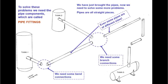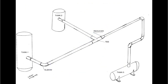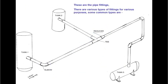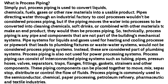So, technically, process piping is any pipe and components that are not part of the building's mechanical systems. Pipe systems for liquids and gases used for heating and cooling processes, or pipe work that leads to plumbing fixtures or waste water systems, would not be considered process piping systems.